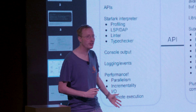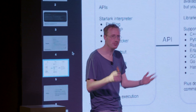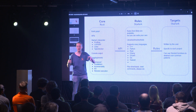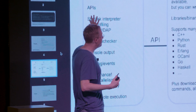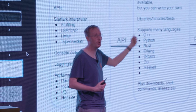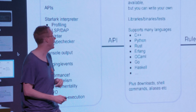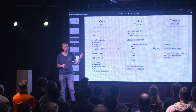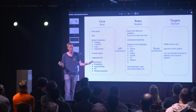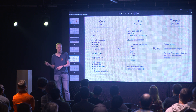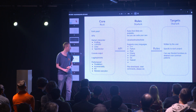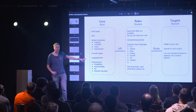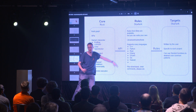Then we come to Buck2, the binary itself. The core is written in Rust. This is the component that holds the build graph — it knows what's going on and knows the state. It provides APIs for the rules so a rule can say what it wants to do, and the build graph can go and execute and elaborate it. It includes a Starlark interpreter, which is also released as a separate open-source project. That interpreter contains things like linters, type checkers, and IDE support. It also has a library for console output and logging, and we can pack a lot of performance into this layer, which benefits everything downstream.